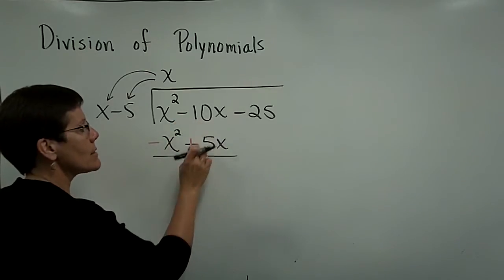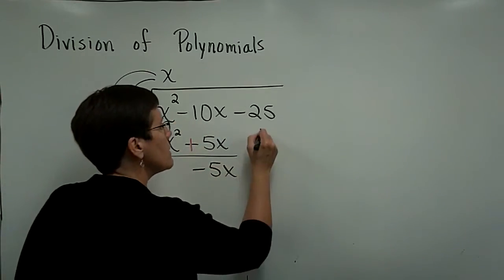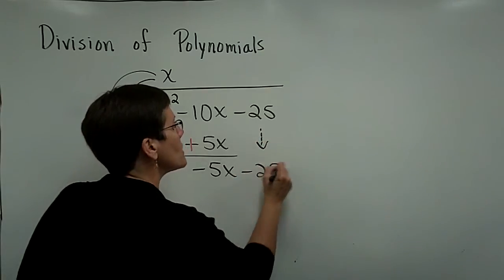And a negative 10x and a positive 5x is a minus 5x. And you'll bring down your next term and start the process again.